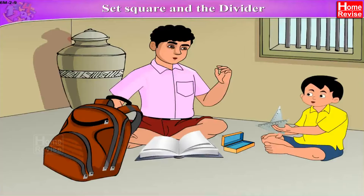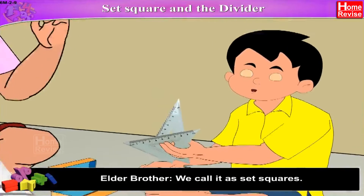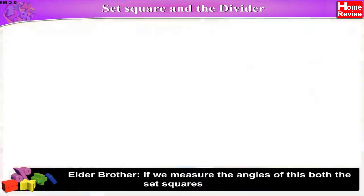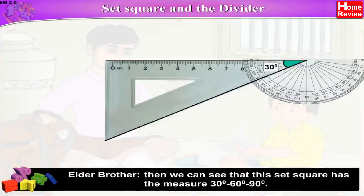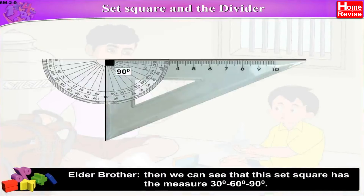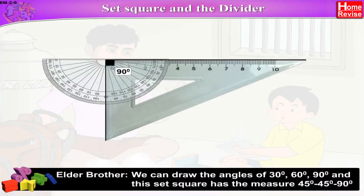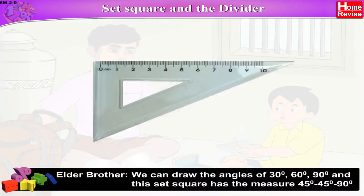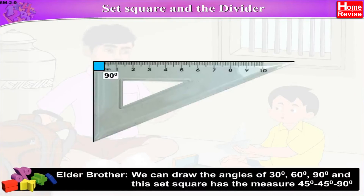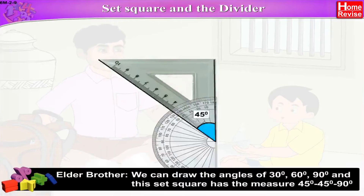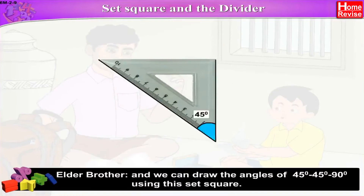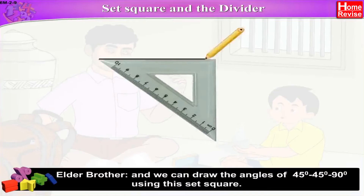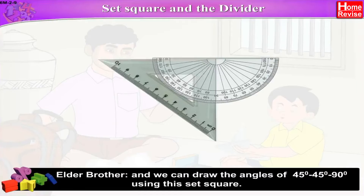Set square and the divider. Brother, what is this? We call it a set square. If we measure the angles of both set squares, we can see that one set square has the measures 30°, 60°, and 90°. We can draw angles of 30 degrees, 60 degrees, and 90 degrees. The other set square has the measures 45°, 45°, and 90°. We can draw angles of 45 degrees, 45 degrees, and 90 degrees using this set square.